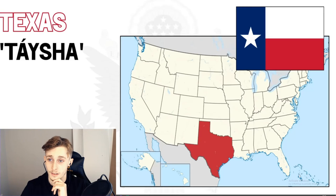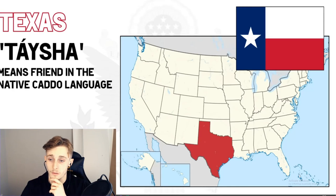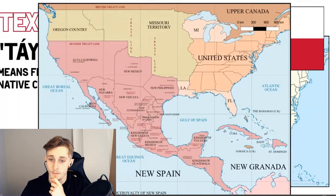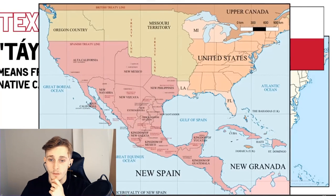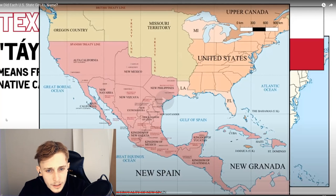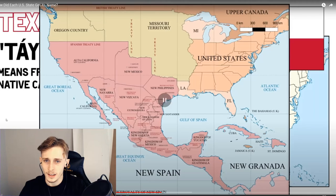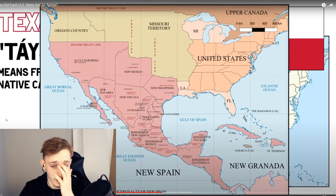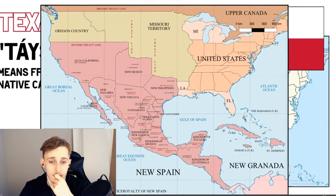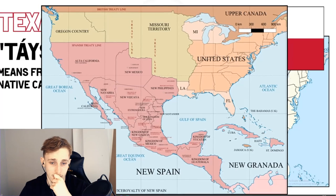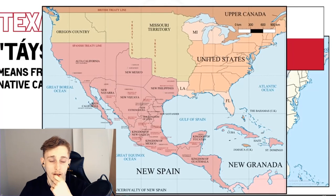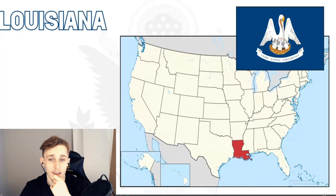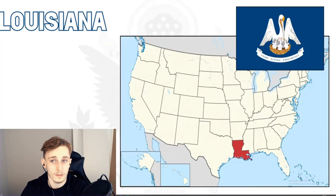Moving on to the biggest of the 48 continental states: Texas. Texas's name originates from the word 'tayshas,' meaning 'friend' in the native Caddo language. Oddly enough, during Spanish colonial rule in the 18th century the area was briefly known as 'New Philippines' — given that the Philippines was also a Spanish colony at the time. How weird would it be if that had stuck, and Texas was called New Philippines like New York or New Jersey?